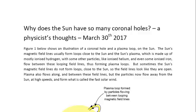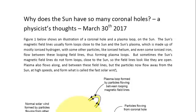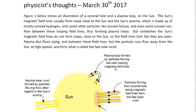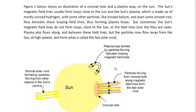This one is on why does the Sun have so many coronal holes. Figure one shows an illustration of a coronal hole in a plasma loop on the Sun. The Sun's magnetic field lines usually form these loops close to the Sun, and the Sun's plasma, which is made up of mostly ionized hydrogen with some other particles like ionized helium and even some ionized iron, flow between these looping field lines.